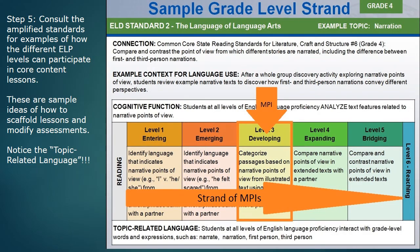Another great resource for modification examples is the Amplified Standards produced by WIDA. The Amplified Standards take objectives from Common Core and show you how a task within that objective might be modified for students at different levels of English language proficiency. For example, in the area of reading, a student who scored a 5 could be expected to compare and contrast narrative points of view, while a student with a reading access score of 1 might only be asked to identify narrative points of view. Notice also that the Amplified Standards include key lists of words that might pose difficulty for English language learners, so you can tackle those vocabulary words from the very start of the unit.